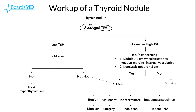From there, if the TSH is low, we should get a radionuclide uptake scan. And if this scan ultimately shows a hot thyroid nodule, then we should simply treat the patient for their hyperthyroidism. However, if this scan shows that the thyroid nodule is not hot, or that it is cold, then from there we should get an FNA, or fine needle aspiration.